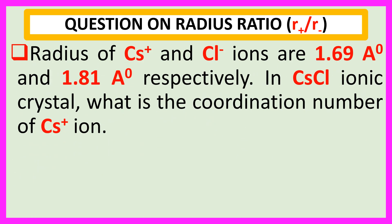Radius of Cs⁺ and Cl⁻ ions are 1.69 angstrom and 1.81 angstrom respectively. In CsCl ionic crystal, what is the coordination number of Cs⁺ ion?